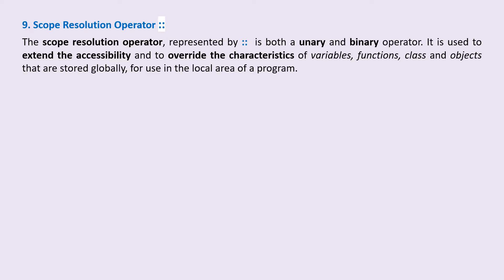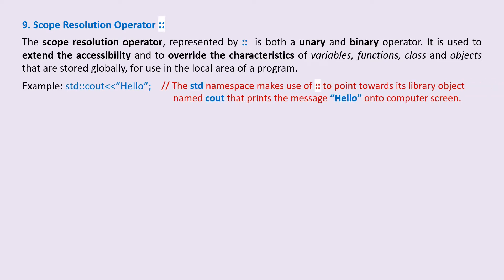For example, we have recently used the std::cout hello statement. Here, the std namespace makes use of the two colon scope resolution operator to point towards its library object named cout that prints the message hello onto the computer screen.